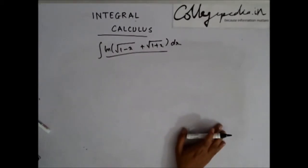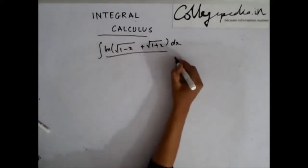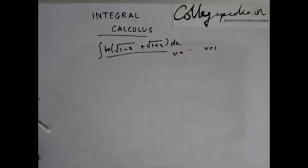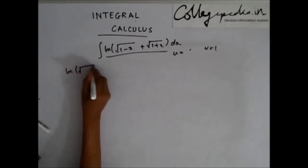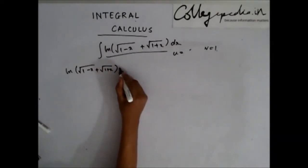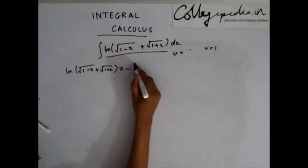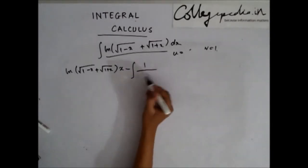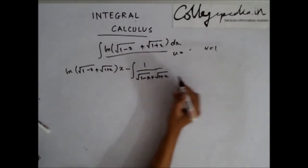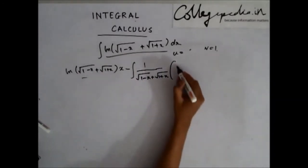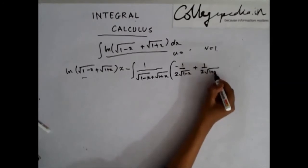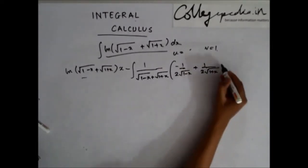Since it has only one function, I'll take the other as a constant: u = ln(√(1-x) + √(1+x)) and v = 1. Applying integration by parts: u·x minus the integral of x times the derivative of u dx. Differentiating the ln gives — differentiating the inside — we get: (-1/2√(1-x)) + (1/2√(1+x)), and we have x dx.